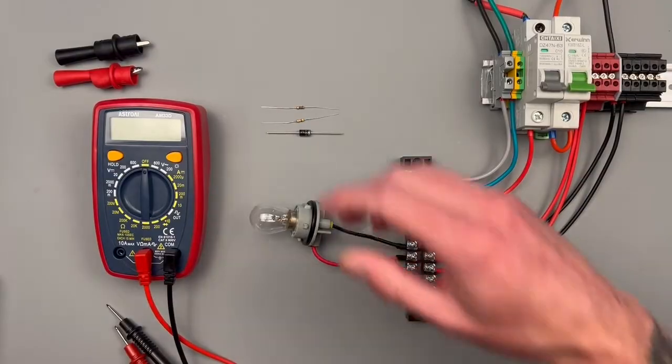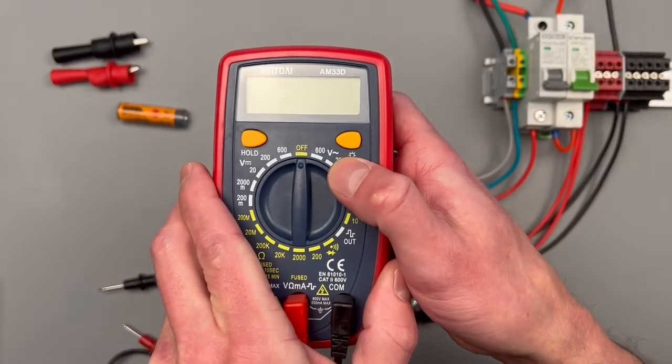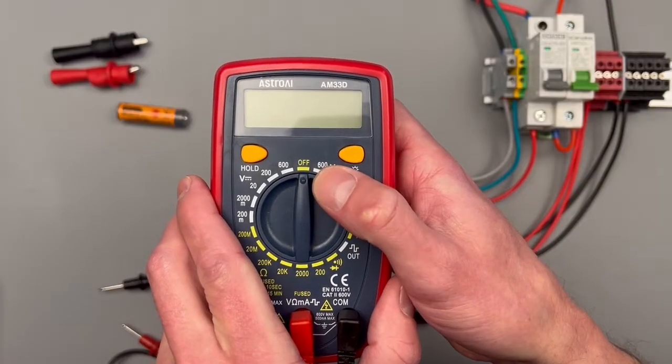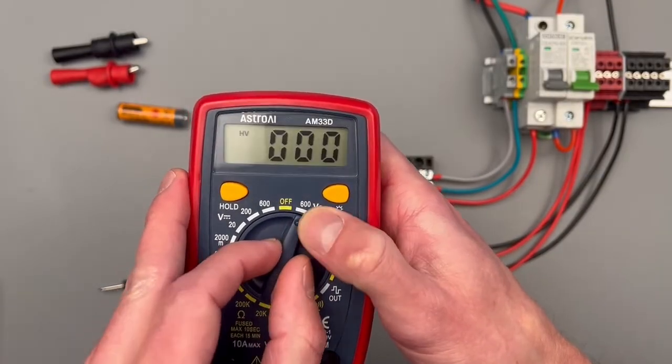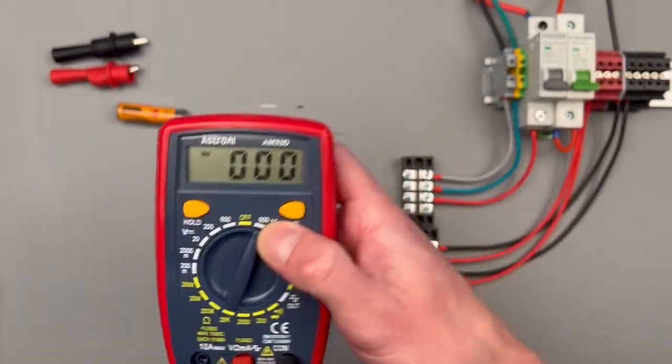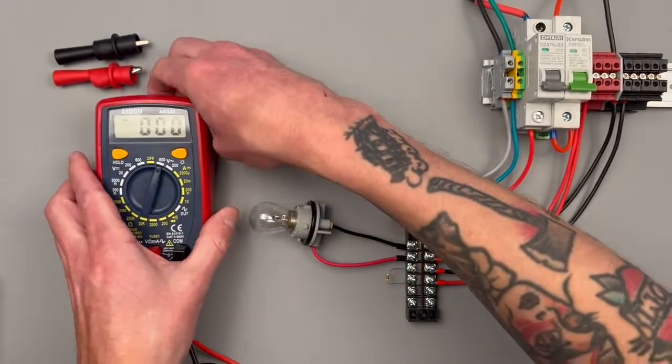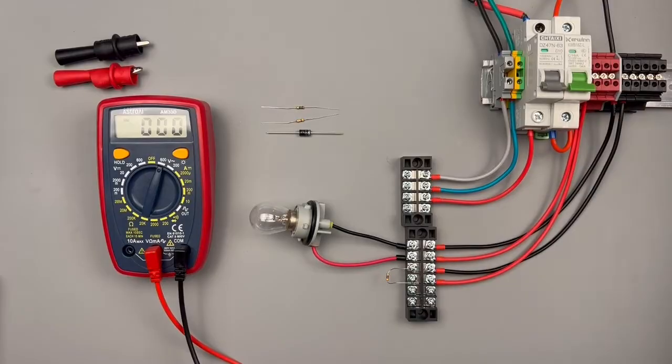Let's go ahead and get started. The first settings that we have here is going to be volts AC. It's going to have these different resolutions for 600 volts. If you're measuring 220, 240, that would be the resolution that you would want to be at.